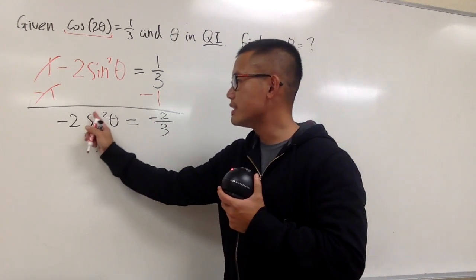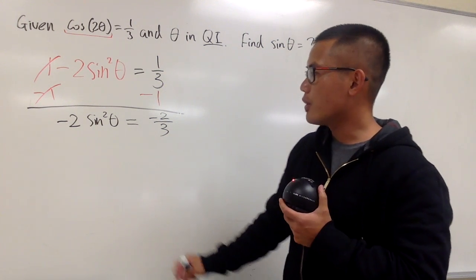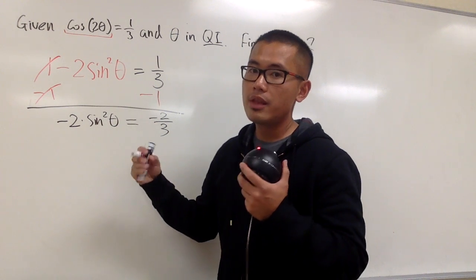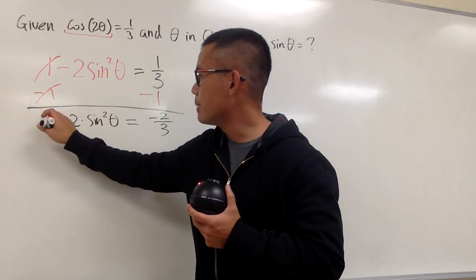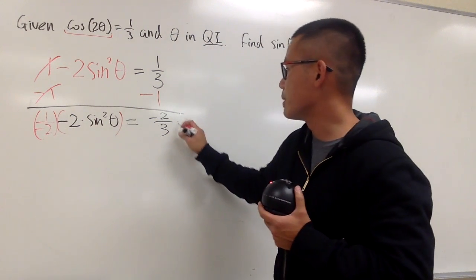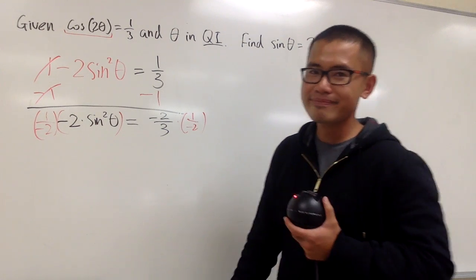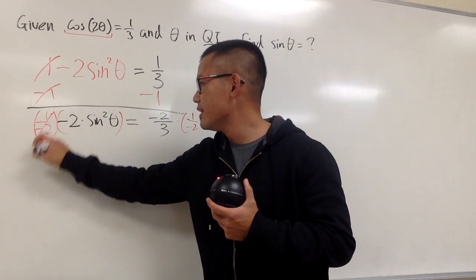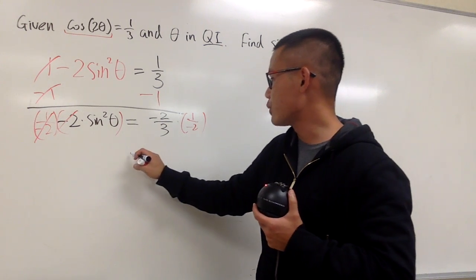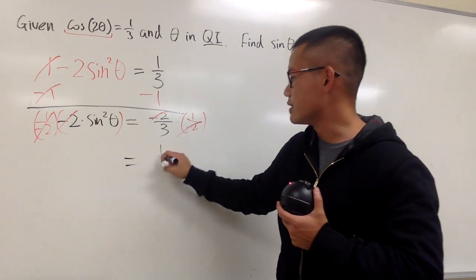And then, we have to isolate the sine squared theta first, before I can isolate the sine theta. So, you see this is negative 2 times the sine squared theta. That means I should go ahead and multiply both sides by 1 over negative 2. So, I'll multiply this by negative 1 over negative 2. And the reason is because this and that will cancel, and then we'll just end up with sine squared theta. This and that will cancel, and we'll just have 1 third.